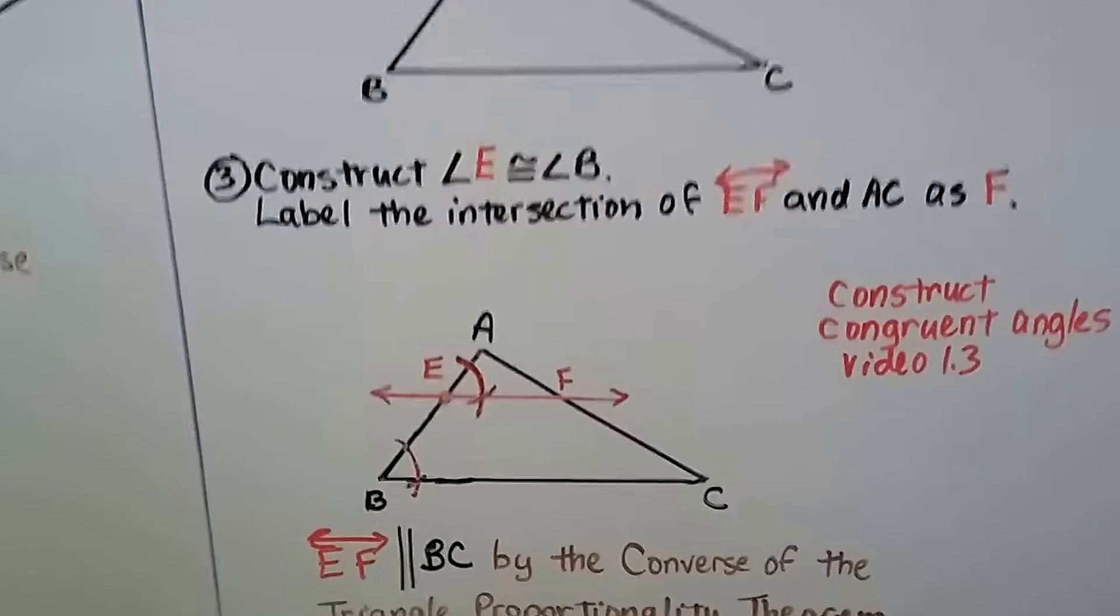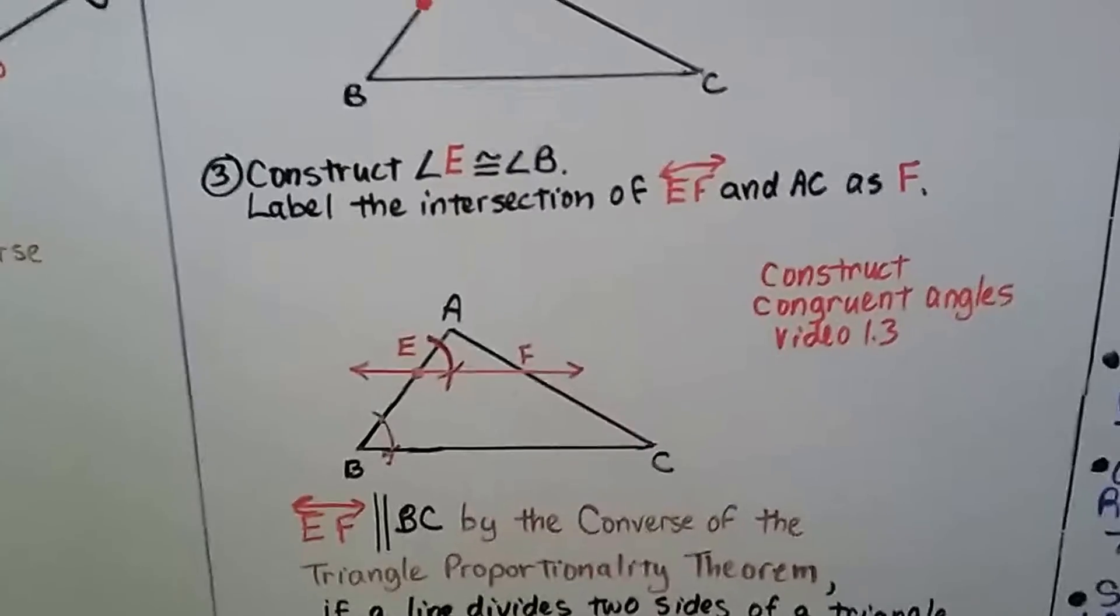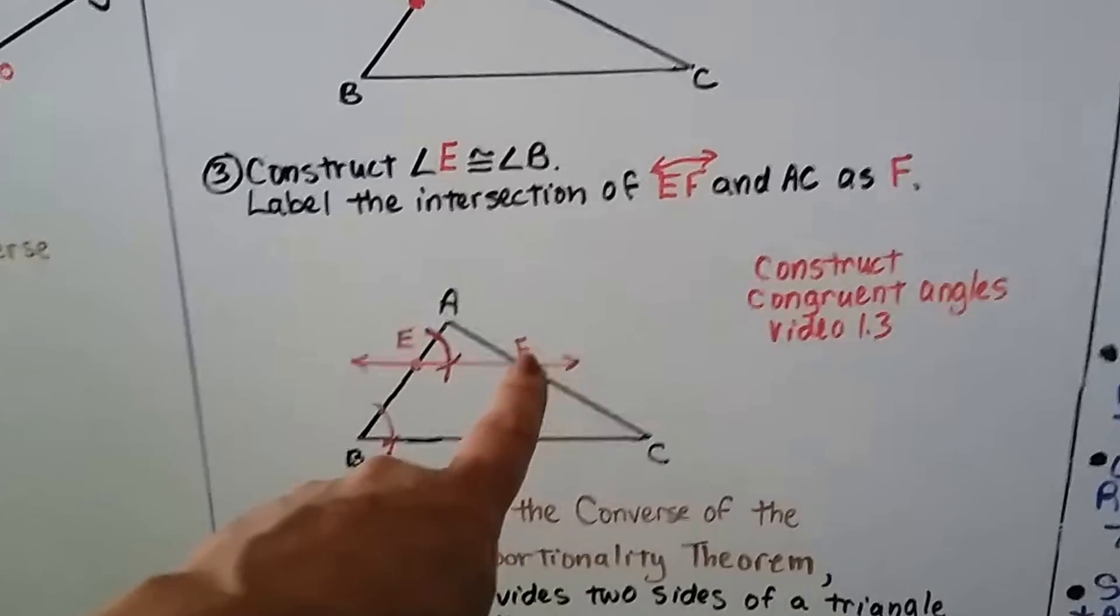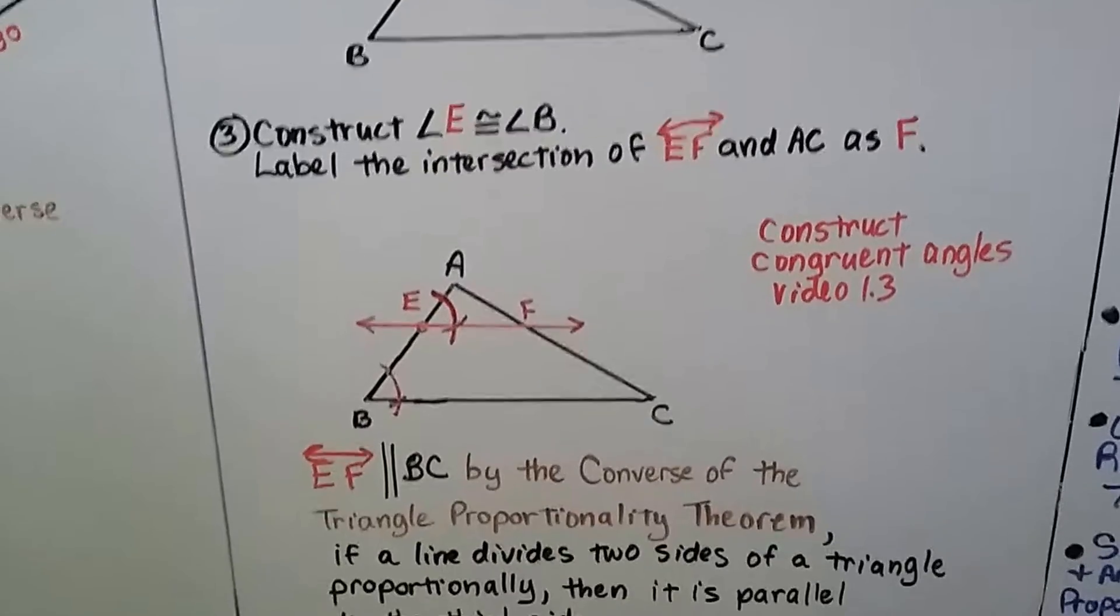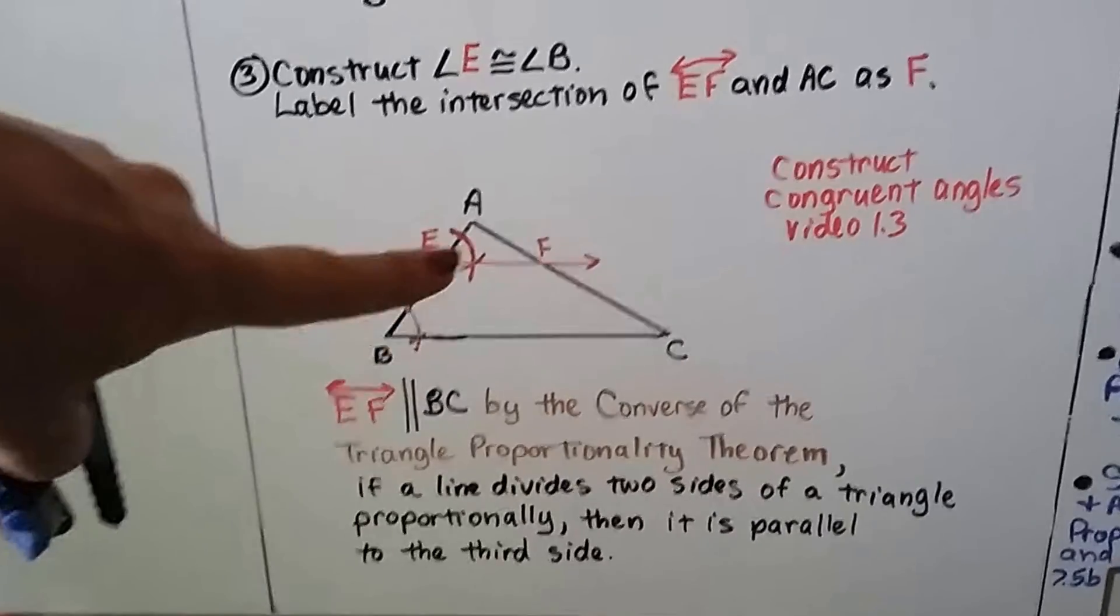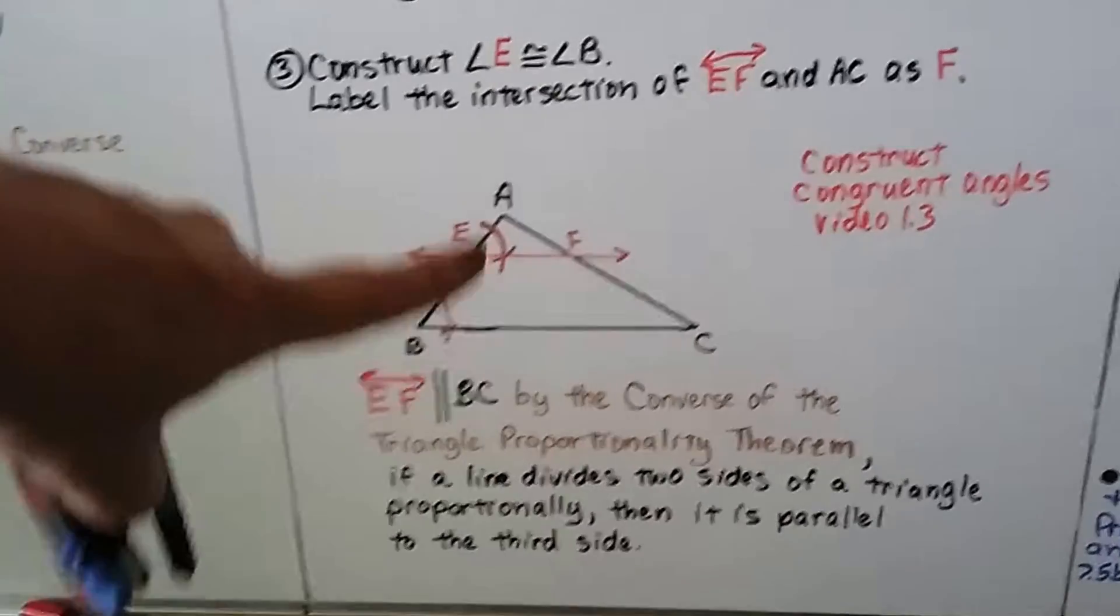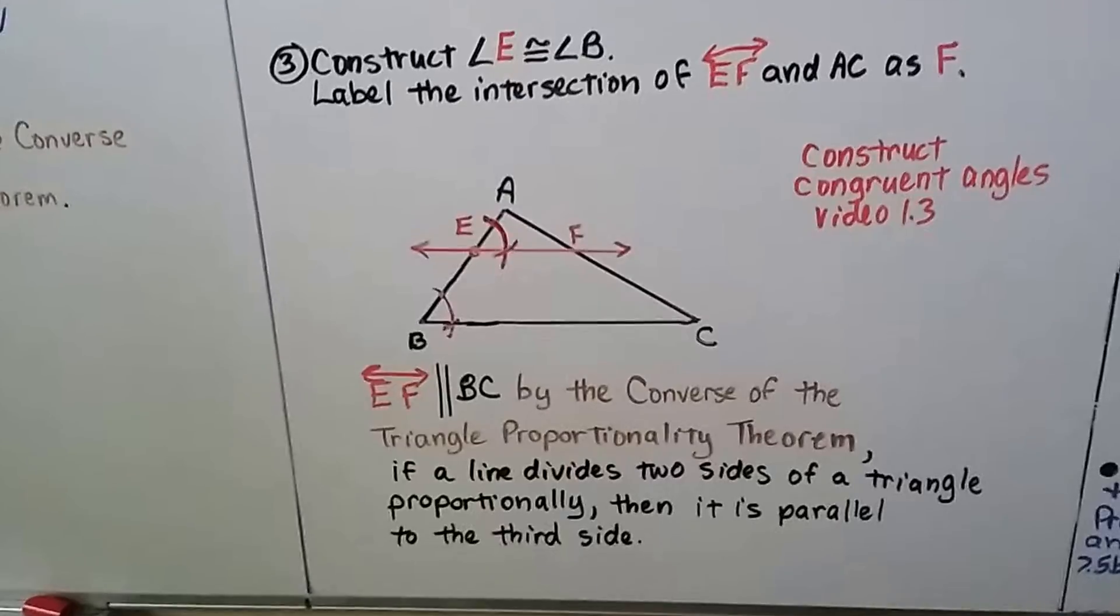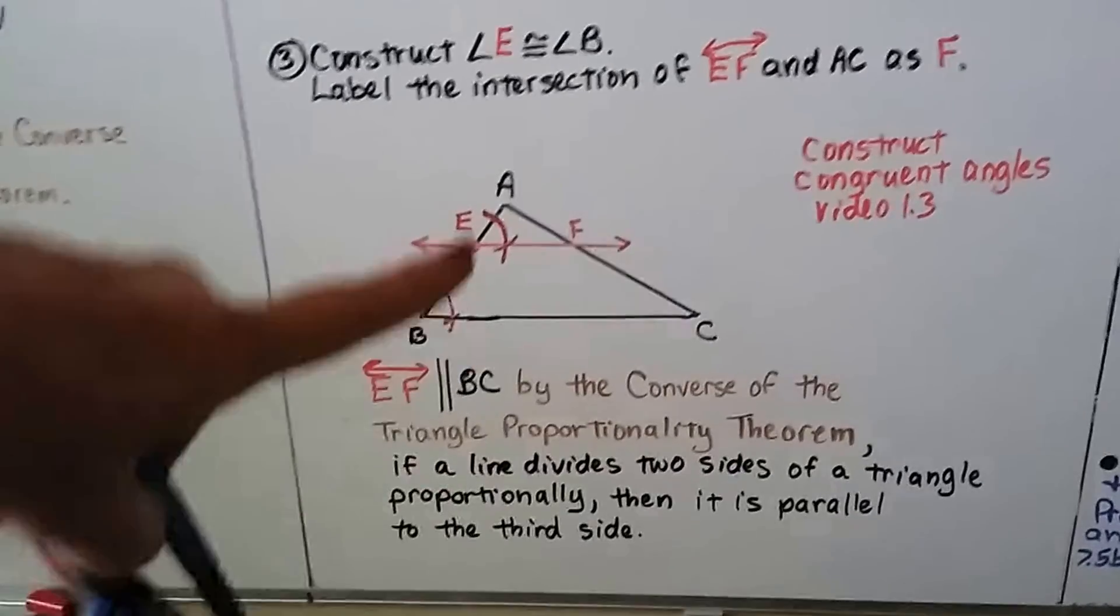Now we've created point F. And we can label the intersection of line EF and AC as F.